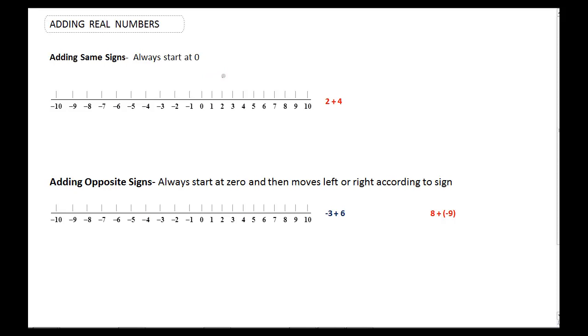We all know how to add 2 plus 4. We know that would be equal to 6, but let's use a number line to show us that it really is that. So we start at 2, and then it says to add 4. We go 4 to the right because that's a positive direction. So 1, 2, 3, 4, and there we are at 6.